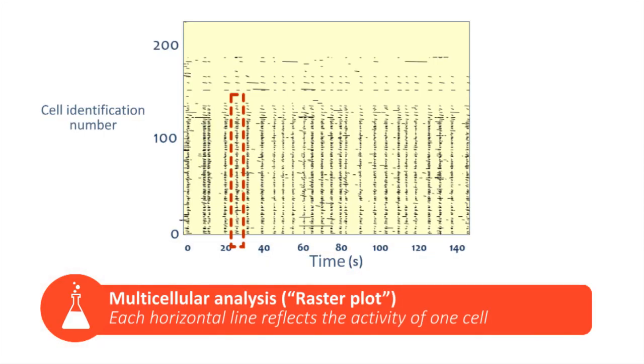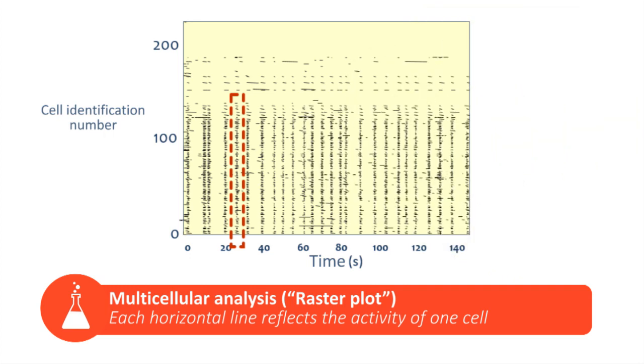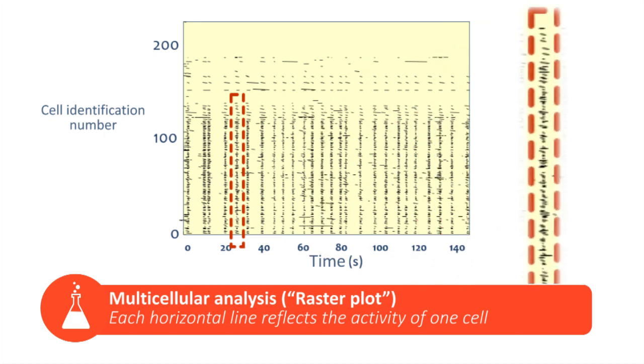The same software generates a graphic for us, known as a raster plot, of all of the calcium activity of the neurons in the recording. The x-axis shows the time, whereas the y-axis represents each neuron individually, and every black dot corresponds to a calcium event in a given neuron at a given time. Vertical lines represent synchronous events in several dozen neurons at a given moment in time.